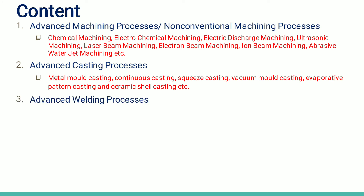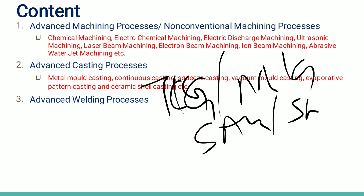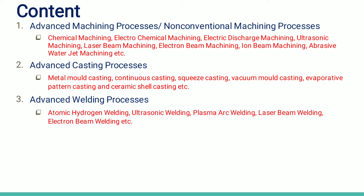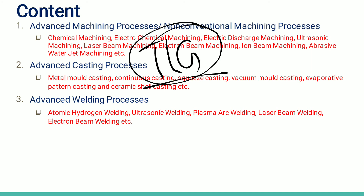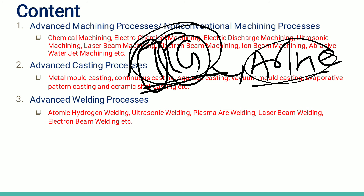Next are advanced welding processes. Previously you studied TIG welding, MIG welding, submerged arc welding, shielded metal arc welding, and gas welding — achieving up to 3600°C in gas welding. Submerged arc welding gives very good penetration. In TIG welding, a non-consumable tungsten electrode is used along with an inert gas such as argon, helium, CO2, or a combination of these.